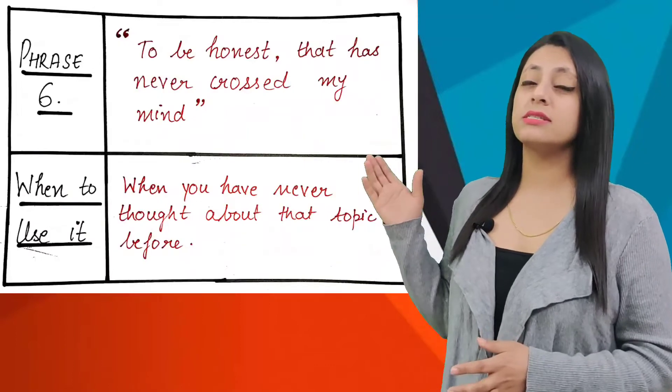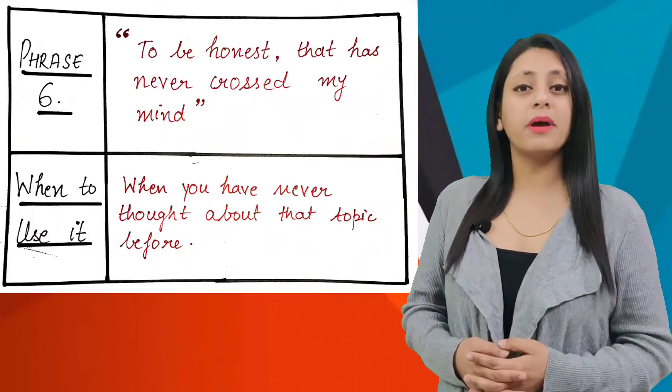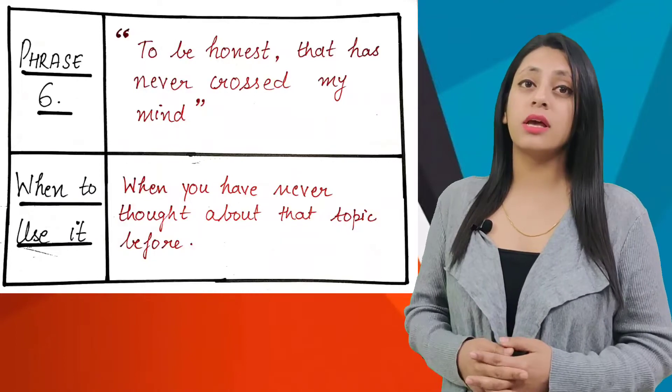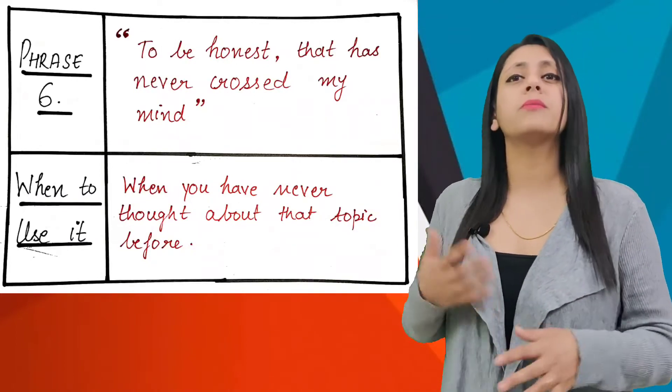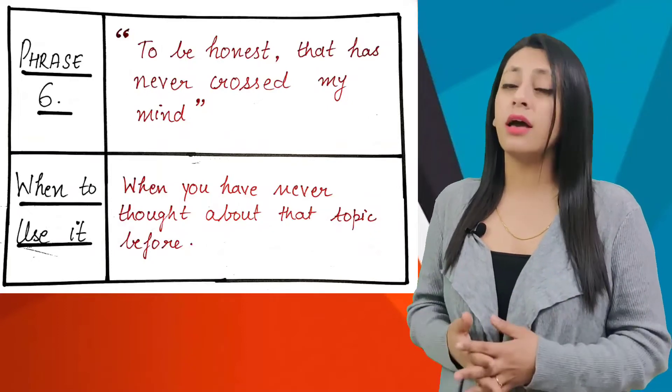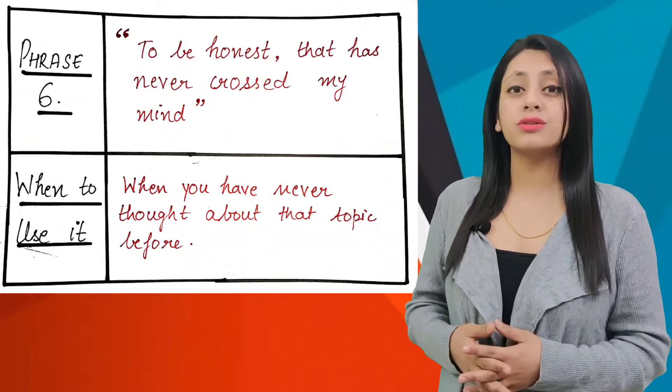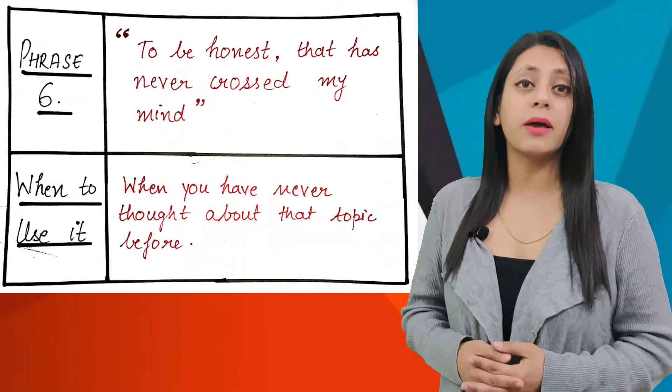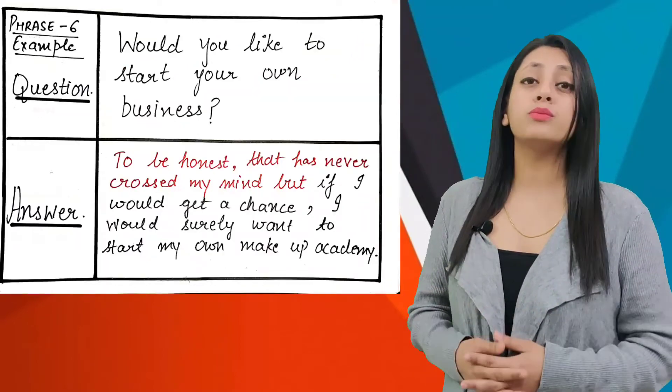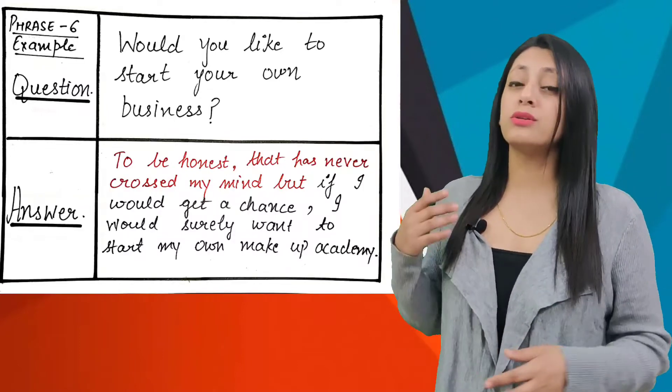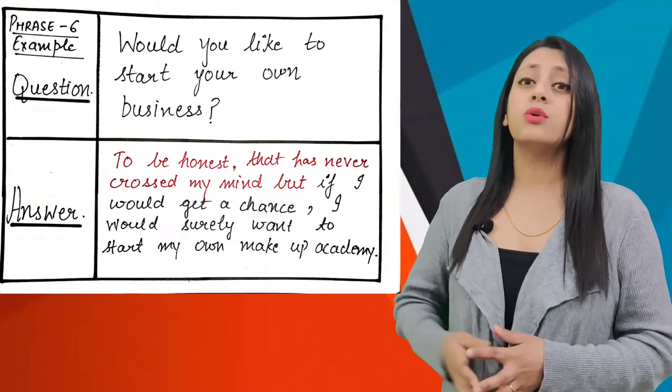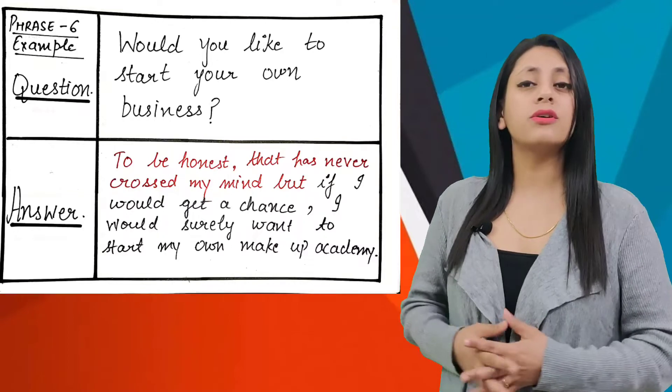Next, sixth phrase: To be honest, that has never crossed my mind. When to use it? When you have never thought about a topic before, or nothing came to your mind regarding it, you can use this. For example, if the examiner asks would you like to start your own business in future, you can use this phrase like: To be honest, that has never crossed my mind.